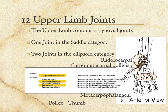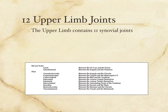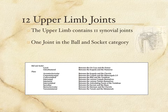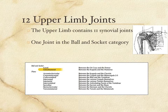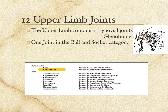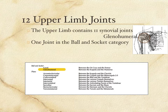There are two last categories within synovial joints: ball and socket, and plane. One of the two ball and socket joints is at the shoulder, referred to as the glenohumeral. The glenoid fossa of the scapula is the receiving cup-like structure — similar to the acetabulum in the lower limb — and the head of the humerus fits into it. So the shoulder joint is referred to as glenohumeral.